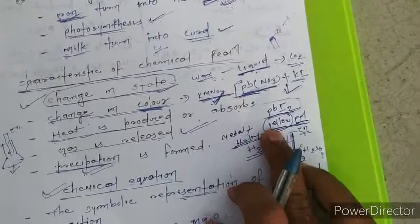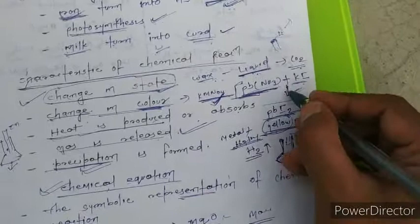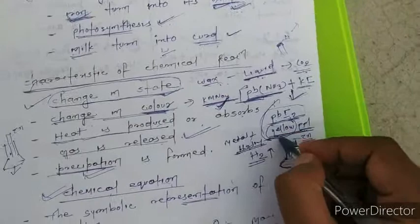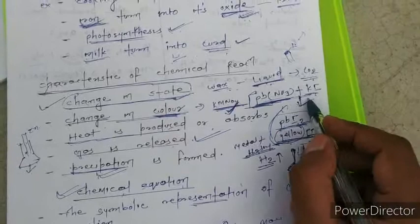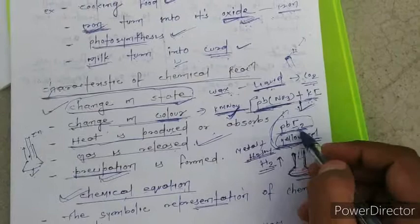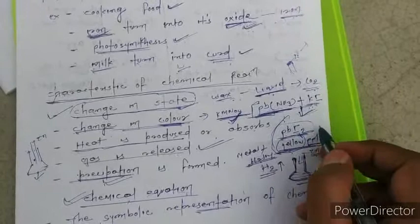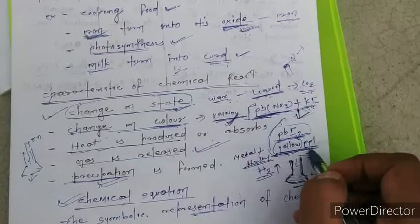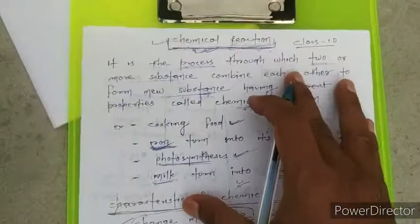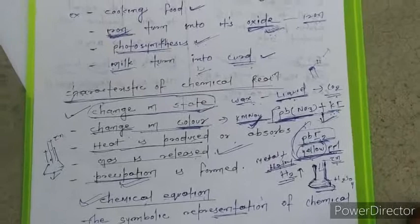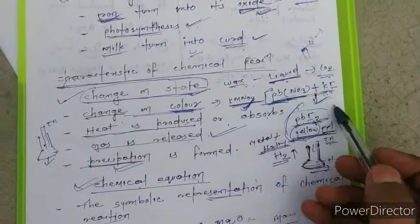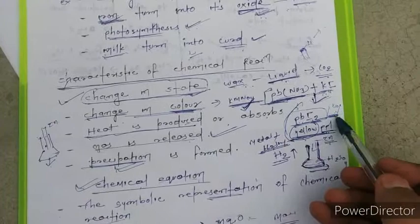One very important thing: if we take lead nitrate and potassium iodide — lead iodide, which is a yellow substance, is formed. This equation is frequently asked in CBSE exams. Lead nitrate plus potassium iodide gives lead iodide (a yellow precipitate) plus potassium nitrate. The term 'precipitation' means a substance which is insoluble in water that settles at the bottom of the container due to its insolubility.